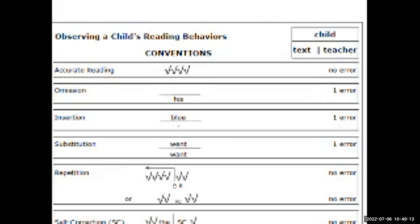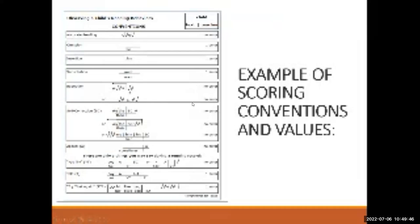Repetition — see how we've written it here — if you're going along and they're reading correctly and then they repeat, you can just box around those check marks. You don't have to write the words underneath; just write an R for repetition and box around the words they repeated. That's not a scorable error. It's a behavior we want to recognize. Repetition is actually a strategy we teach students to use when reading doesn't make sense to them or to help them clarify. We do want to make note of it so we can see if they're over or under using it.